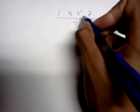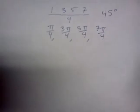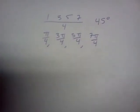So adding pi to each of these, we get pi over 4 for the first quadrant, 3 pi over 4 for the second quadrant, 5 pi over 4 for the third quadrant, and 7 pi over 4 for the fourth quadrant. And that's it.